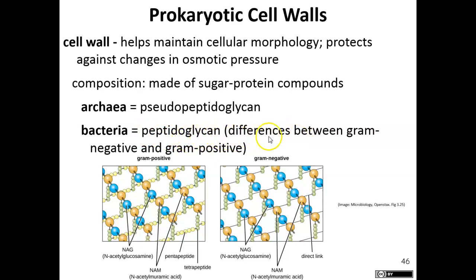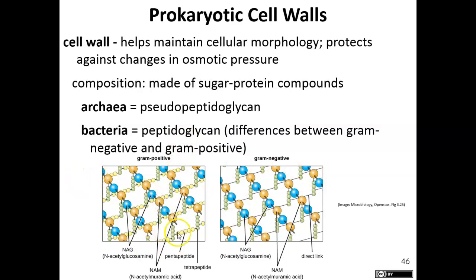Peptidoglycan also allows us to separate organisms into two major groups of bacteria: gram-negative and gram-positive, because the amount of peptidoglycan differs between the two. This image shows gram-positive and gram-negative bacteria with their peptidoglycan.